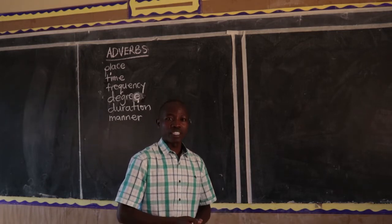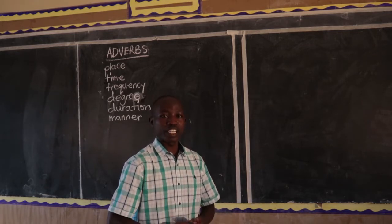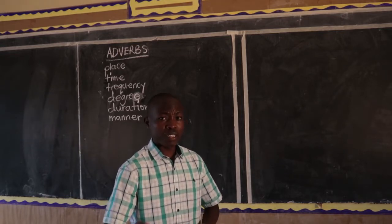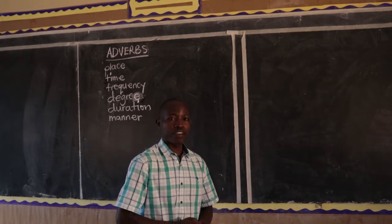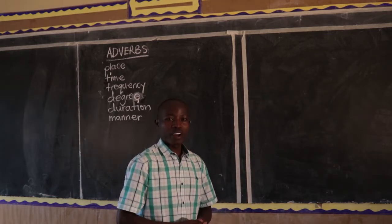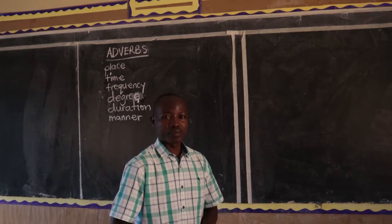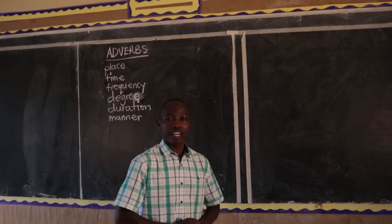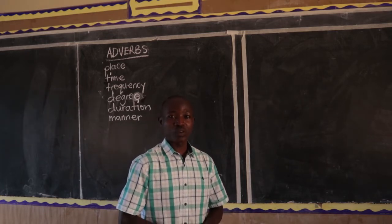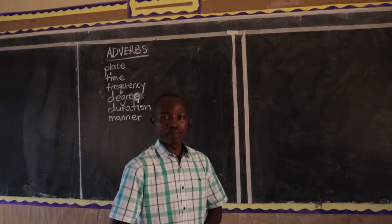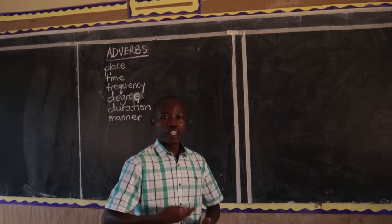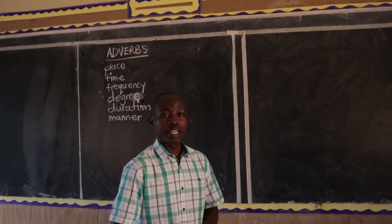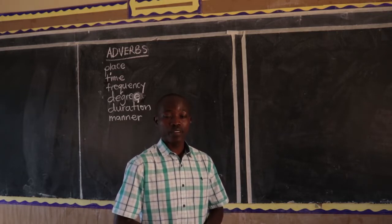Number two, write the word 'voluntarily', from the word 'volunteer'. I am doing voluntary work — therefore I am doing it voluntarily. Next word, write the word 'skillfully', from the word 'skill'. If you have a skill, then you do something skillfully. Next word, write the word 'energetically', from the word 'energy'. He did his work energetically. Next word, write the word 'fluently'. Next word, write the word 'publicly', from the word 'public'.